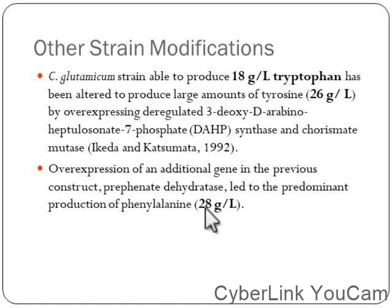These modifications in particular strains help to improve product accumulation in the cell. By altering the metabolic pathways or introducing new genes into the system to alter a particular pathway, we achieve greater product formation. This is about metabolic engineering. Thank you.